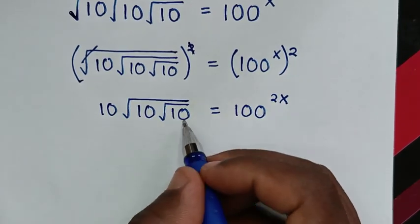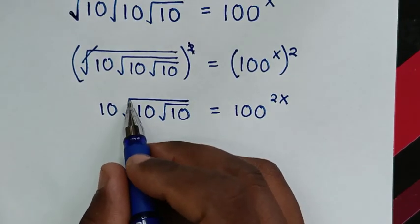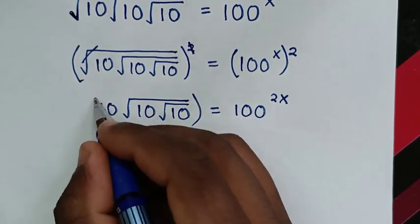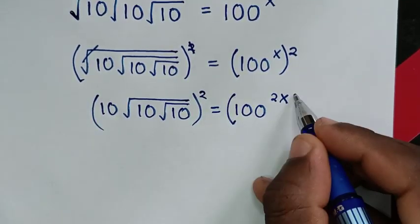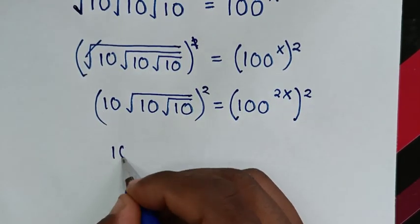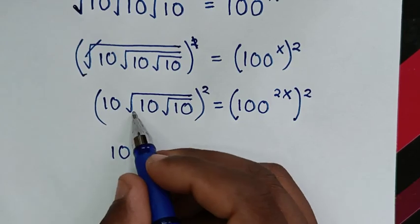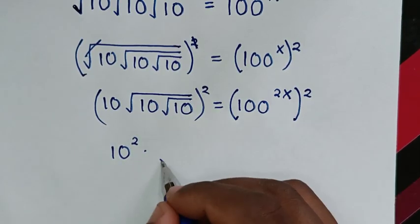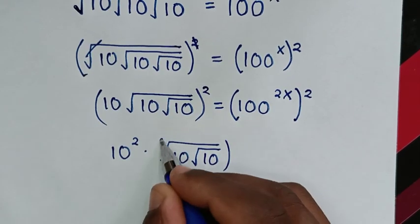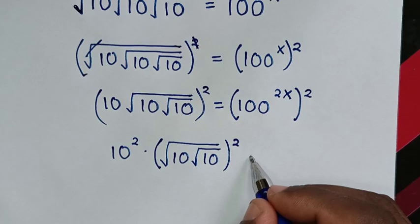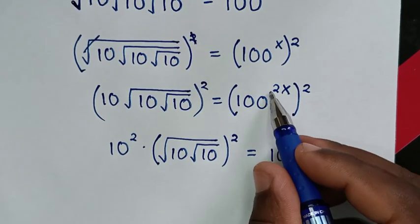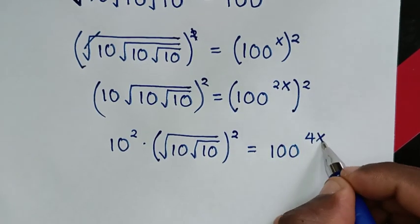In the next step, to remove the second square root, we square both sides again. On the left, 10 squared times the bracket of square root of 10 under square root of 10, squared. On the right side, 100 power of 2x squared becomes 100 power of 4x.